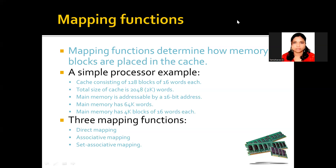To explain this, let me take a simple processor example. The cache memory is 64K words, and let us assume that the main memory has 4K blocks of 16 words each. It is 16-bit addressable, and the size of the cache memory is 128 blocks.